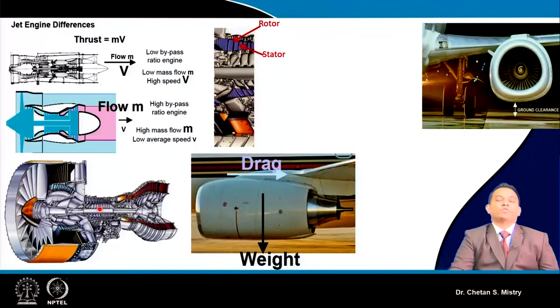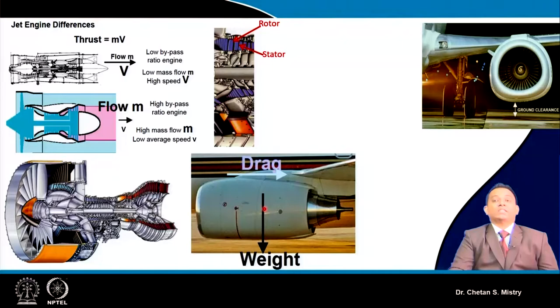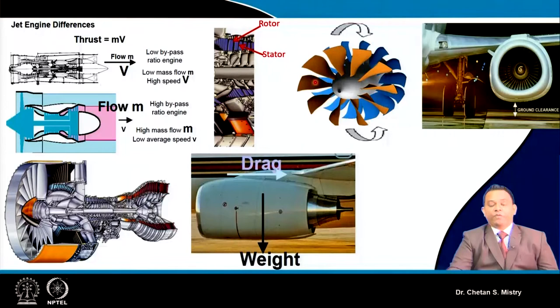For the near future, people are looking for alternatives to address these issues along with environmental constraints imposed by regulatory bodies. This has given the idea and motivation to go with a different kind of configuration — the contra rotating configuration.